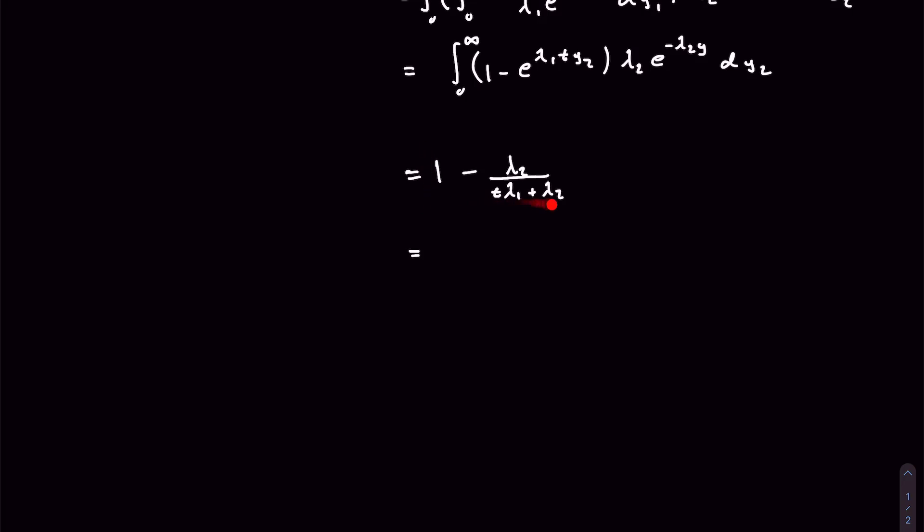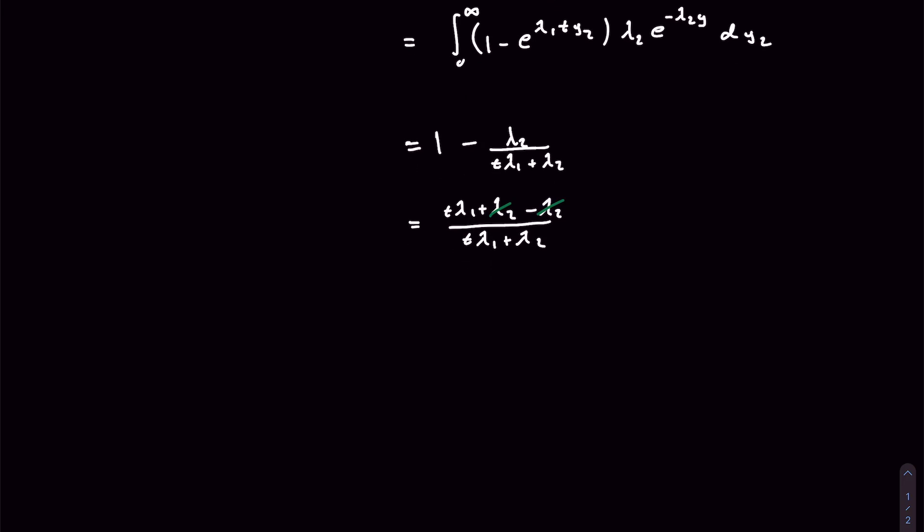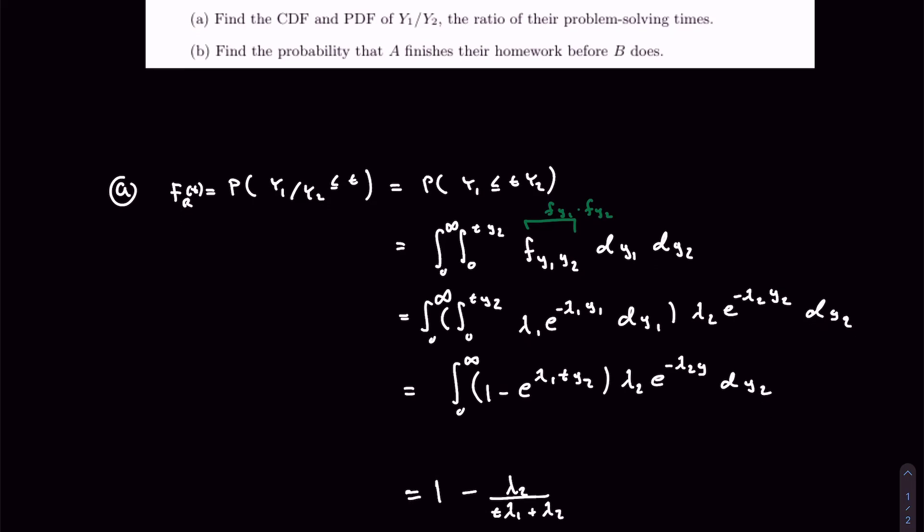And simplifying this, I mean this is a good enough solution, but we can also seek to write it out in the same denominator, so this one here, we can translate to T lambda 1 plus lambda 2 divided by the same thing. So we get T lambda 2 T lambda 1 plus lambda 2 minus lambda 2, and these guys cancel, and then we're left with a cleaner expression like that. Okay, let's move on to, right, let's also calculate the PDF,